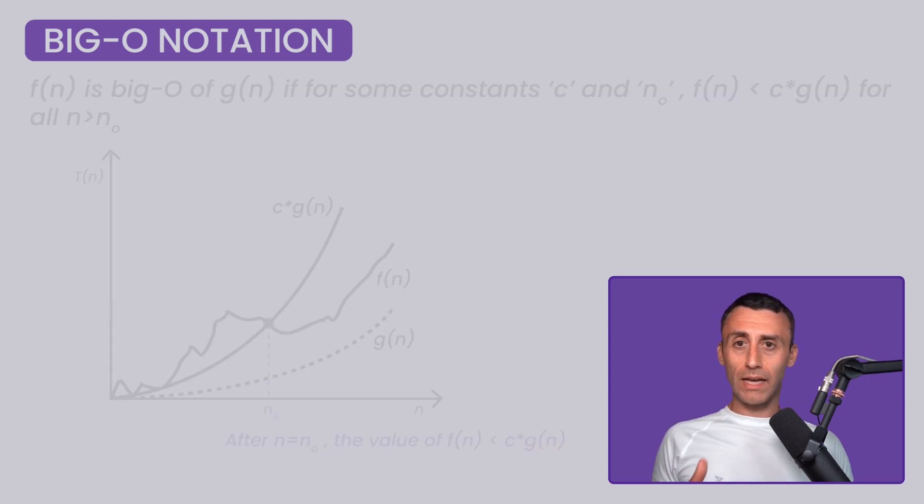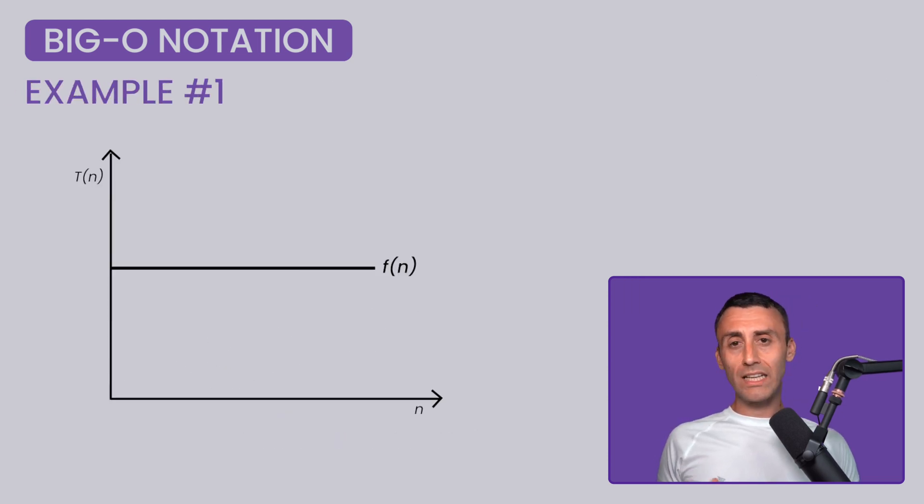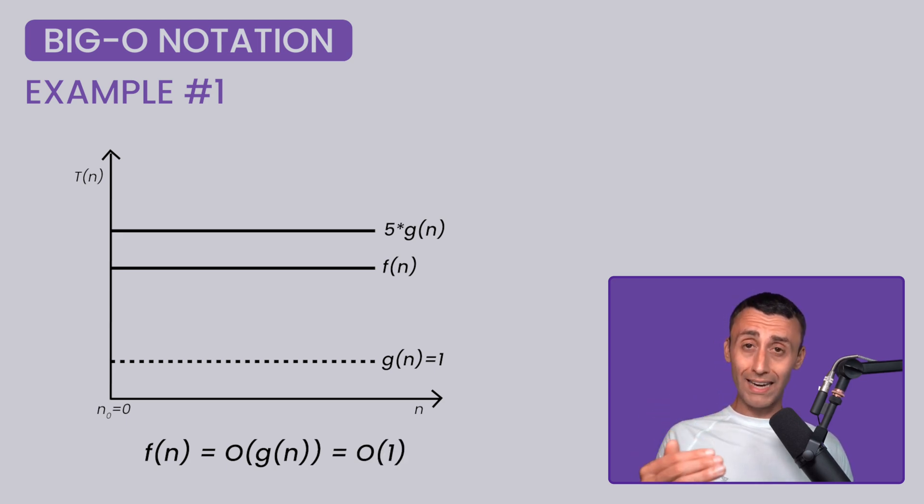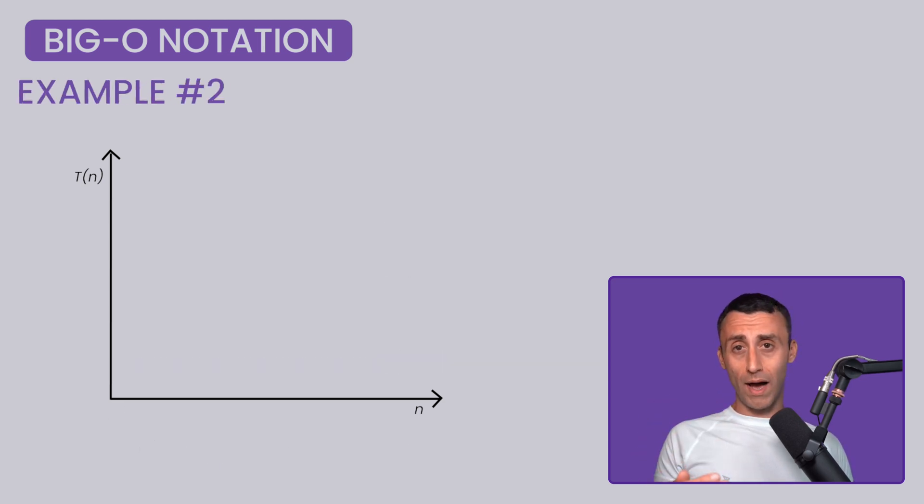Let's understand this with a couple of examples. Let's say that we have a function called g of n equal 1. Now, f of n is less than or equal to 5 times g of n for all values where n is greater than or equal to 0. And hence, we can say that f of n is equal to big O of g of n equal big O of 1.